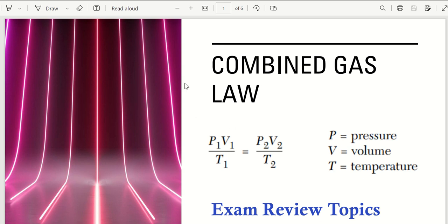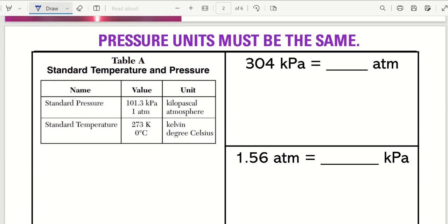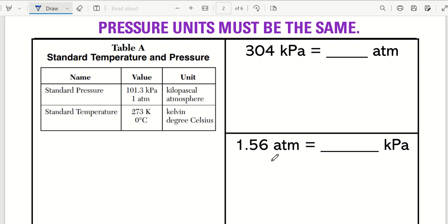Alright, time for combined gas law review. This is the formula directly from Table T, but we'll look at that a little bit later. First, what I want to make sure you realize is that in the combined gas law formula, pressure units have to be the same. So if you were given pressure in kilopascals and pressure in atmospheres, you could have to do a conversion.